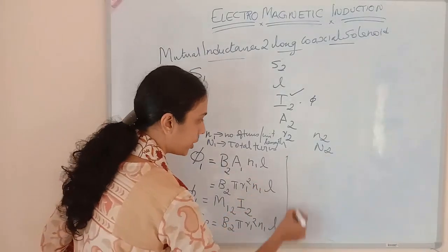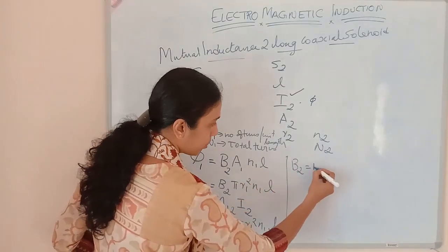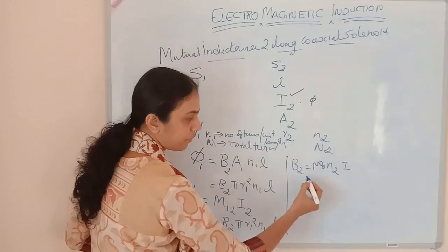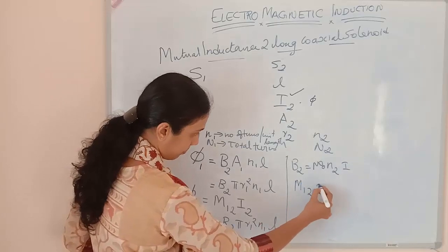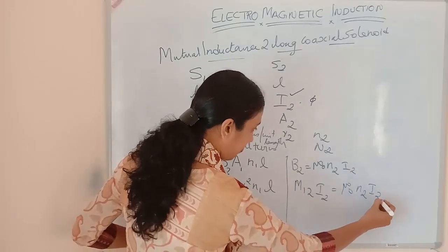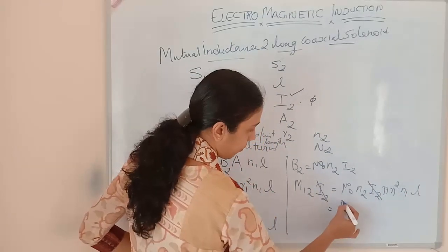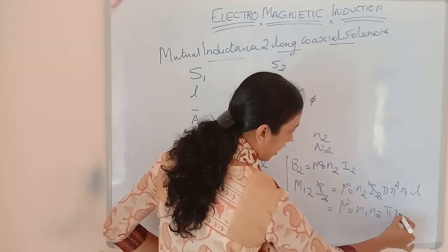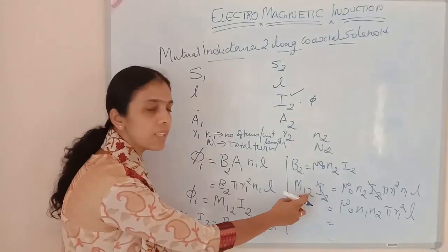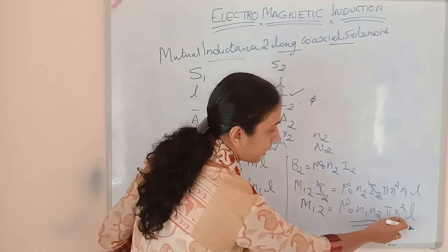Equating the two expressions: M12 × I2 = B2 × πR1² × n1 × L. The magnetic field of the second solenoid is B2 = μ₀ × n2 × I2. Substituting: M12 × I2 = μ₀ × n2 × I2 × πR1² × n1 × L. Cancelling I2 from both sides, we get M12 = μ₀ × n1 × n2 × πR1² × L. This is the mutual inductance of the first coil with respect to the second coil.